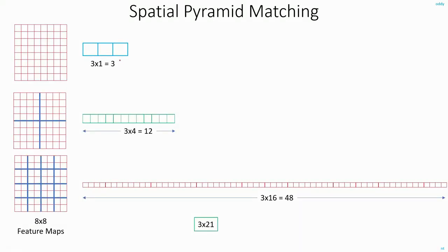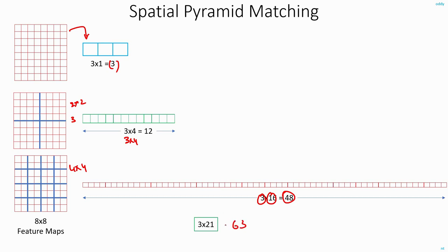The same thing is represented here. For the complete image, taking the histogram gives an array of size 3. When you divide it into a 2x2 grid with three features, you get a feature vector of length 3×4 = 12. When you divide into a 4x4 grid, you get 3 features × 16 = 48. In total, 3 + 12 + 48 = 63, giving a feature vector of length 63. This comes from 3 features × (1 + 4 + 16) = 3 × 21 = 63.